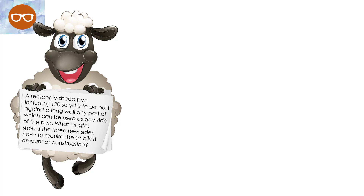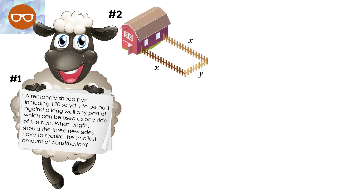A rectangular sheep pen enclosing 120 square yards is to be built against a long wall, any part of which can be used as one side of the pen. What lengths should the three new sides have to require the smallest amount of construction? Number one, we read it. Number two, we draw our picture — here we have our barn with sides labeled using variables. Number three, we look at the area formula and perimeter formula: area is length times width, which is x times y.